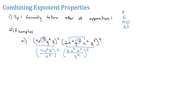Now that we've gone through and simplified the parentheses, we'll look at any exponents outside of parentheses. An exponent outside the parentheses goes onto each and every factor. So 4 squared is 16. For the y, the double exponent gets multiplied — 2 times 2 is 4. z squared, and x to the 5 times 2 is 10.